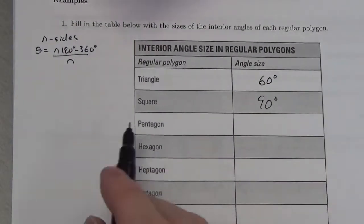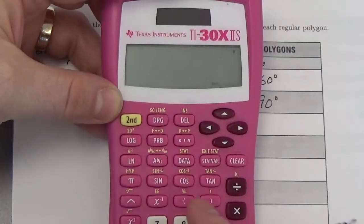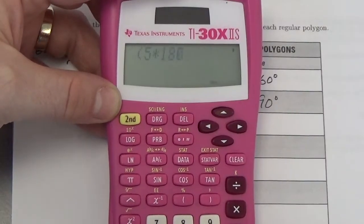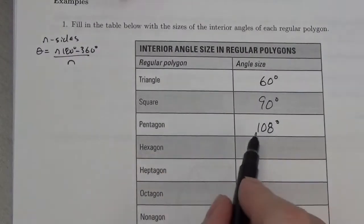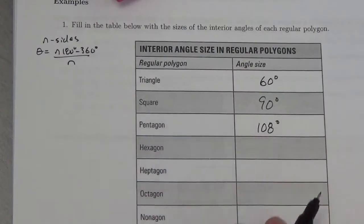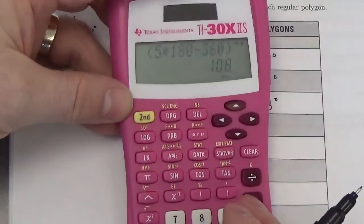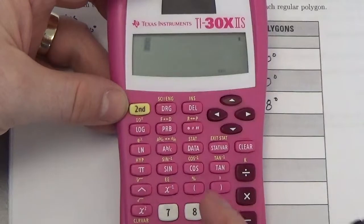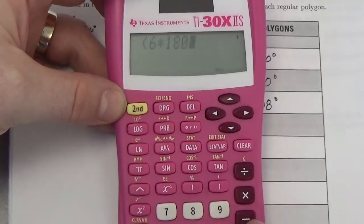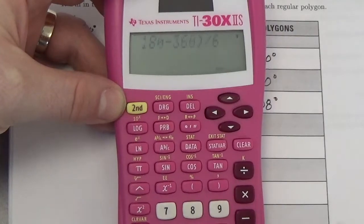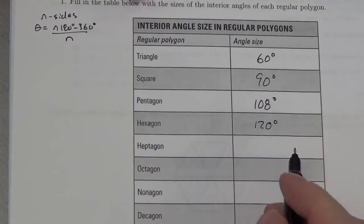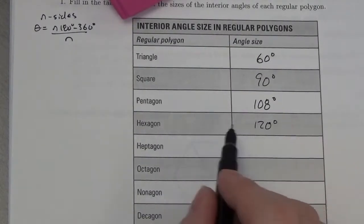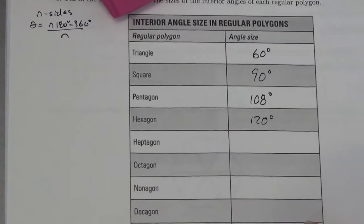We already did the pentagon in a previous example, but let's walk through it again: 5 times 180, minus 360, divided by 5 — 108 degrees. So as long as it's a regular pentagon, each corner is 108 degrees on the inside. For a hexagon: 6 times 180, minus 360, divided by 6 — 120 degrees. Because 120 divides 360 — 360 divided by 120 is 3 — we can use a hexagon to tile a floor.